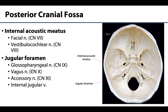Moving to the posterior cranial fossa: the internal acoustic meatus is located on the petrous part of the temporal bone and leads into the inner and middle ear regions housed within the petrous part. The facial nerve enters here and eventually makes its way out of the skull, whereas the vestibulocochlear nerve enters and never exits — which makes sense because the inner ear is within the petrous part and the vestibulocochlear nerve is directly involved in hearing and equilibrium.